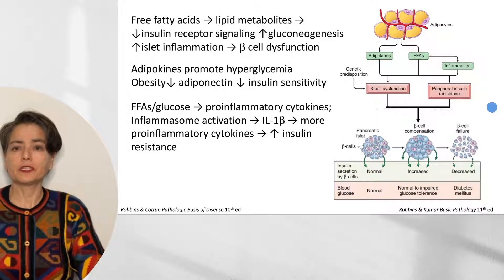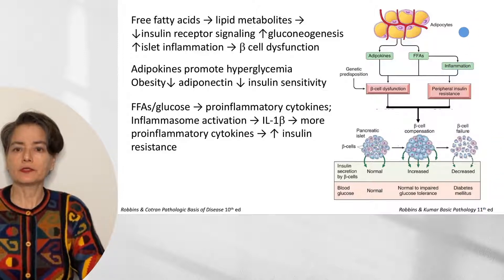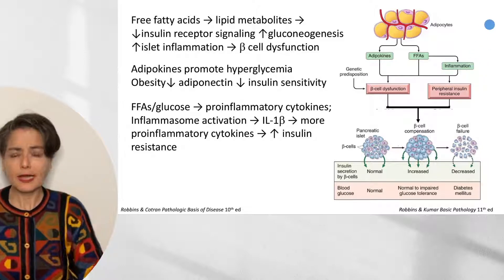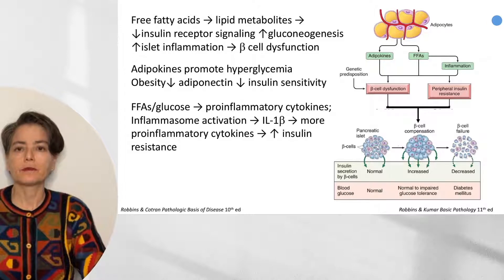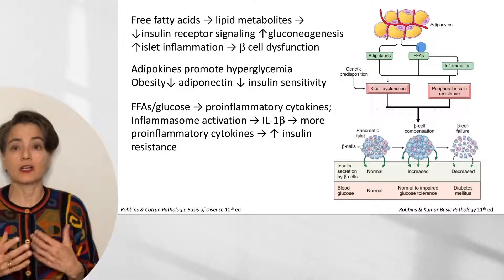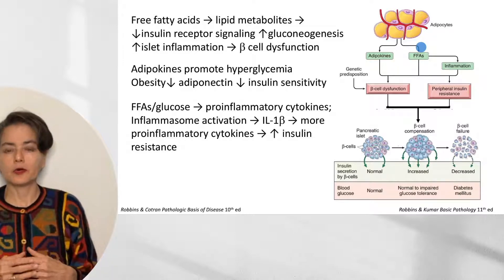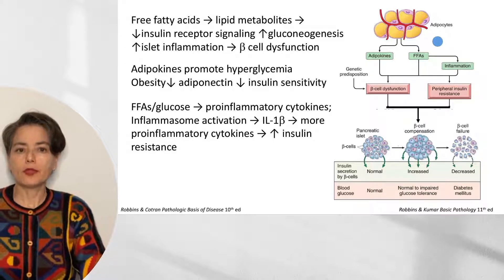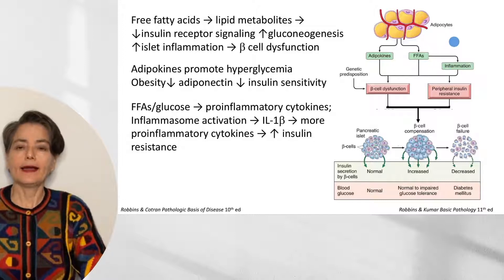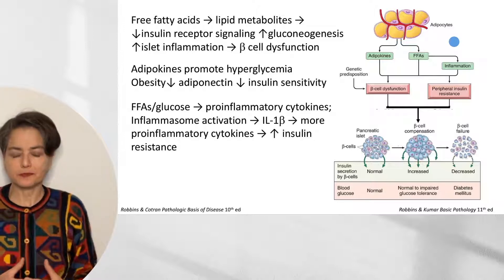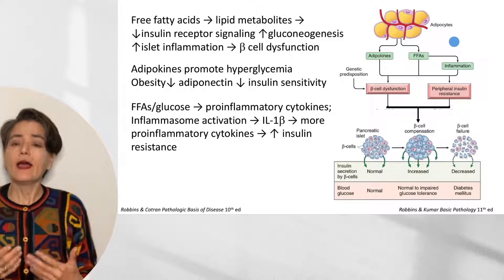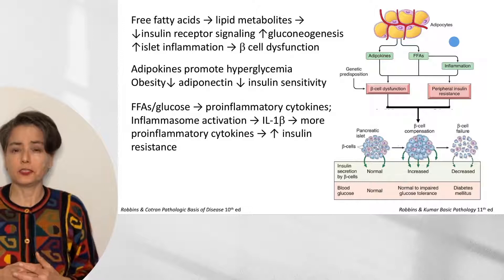This is a hybrid figure put together from Robbins and Cotran Pathologic Basis of Disease and Robbins and Kumar Basic Pathology, 11th edition. I want to discuss how hyperglycemia leads to the complications of diabetes. Fat is not inert — it does a lot. It puts out cytokines and hormones. One thing fat can release is free fatty acids, and it's thought that visceral abdominal fat is more prone to lipolysis than fat deposited elsewhere, which may be why that pattern of fat deposition is more closely associated with type 2 diabetes.